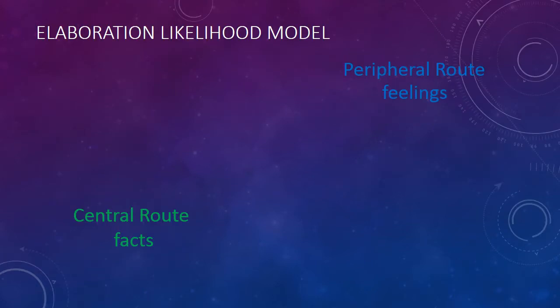Here is the elaboration likelihood model. The elaboration likelihood model says that persuasion occurs through one of two routes: the central route or the peripheral route. The central route uses facts to persuade people, and the peripheral route uses feelings.